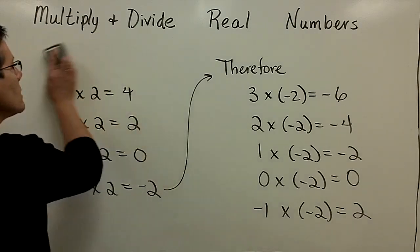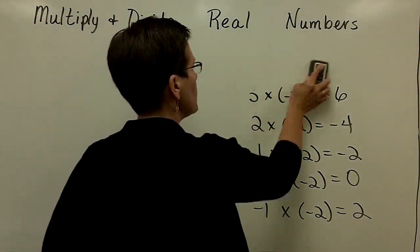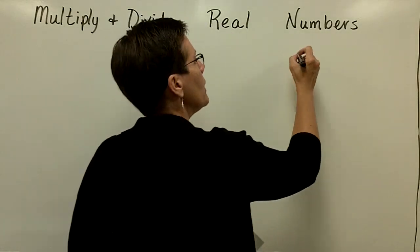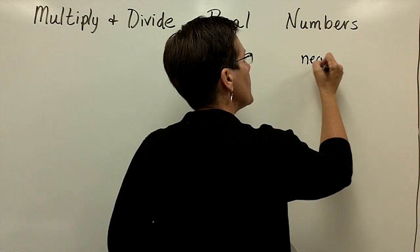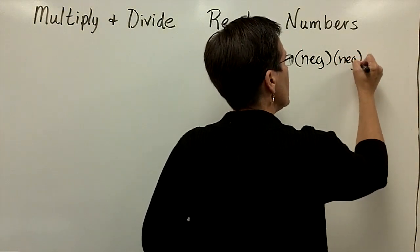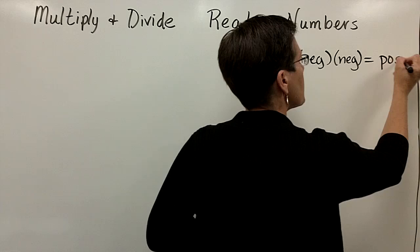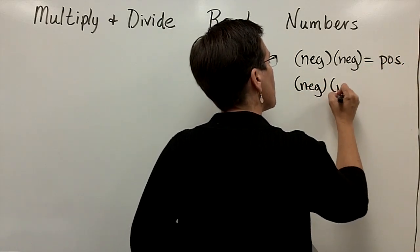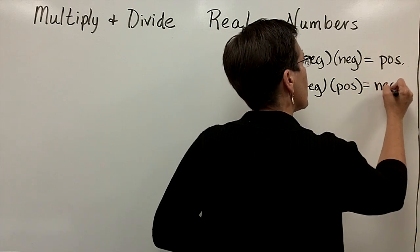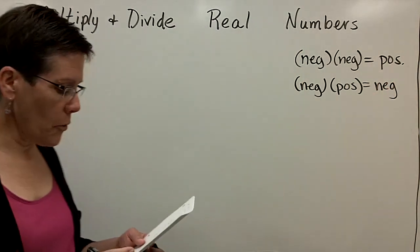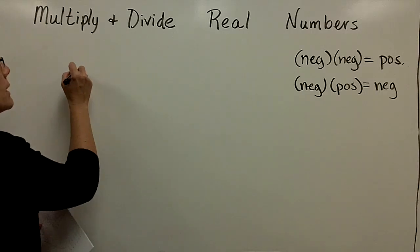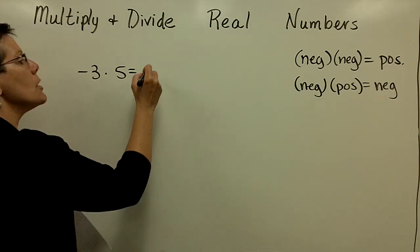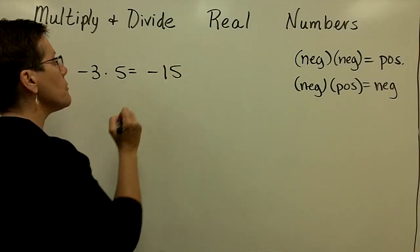Let's write a summary and practice a few problems, including a fraction or two. We now know that a negative number times a negative number gives us a positive result, and a negative number times a positive number gives us a negative result. For example, a negative 3 times a positive 5 — a negative times a positive — gives me a negative 15.